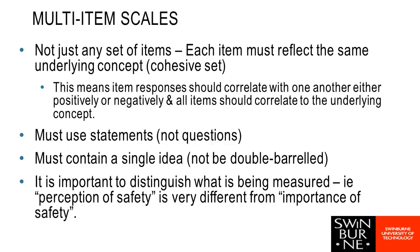When we are writing our own multi-item scale it's really important that we remember the scale is measuring some sort of underlying perception, trait, or concept. So we want to have what we call a cohesive set, meaning all of our items are measuring that same concept — they should all correlate with one another and with the underlying trait we are trying to measure.